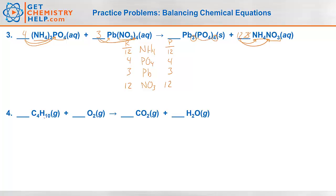Number four: butane reacting with oxygen to produce carbon dioxide and water — a combustion reaction. Notice oxygen appears in one place on the reactant side but in two places on the product side, so we learned that means we balance oxygen last. I'll mark it with a star. So four carbons on the left — let's make this four carbons on the right. Ten hydrogens on the left, two on the right, so multiply by five.